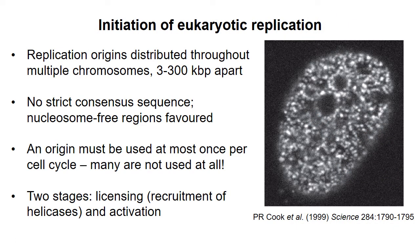Generally speaking, eukaryotes have much larger genomes than bacteria, spread over multiple chromosomes. So to complete the task of DNA replication in a reasonable length of time, we need multiple replication origins. The bright areas in this figure represent newly synthesized DNA. From 30,000 to 50,000 origins fire in a typical cell cycle in humans.